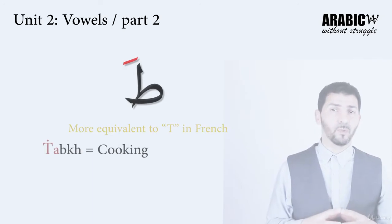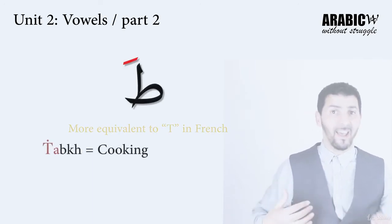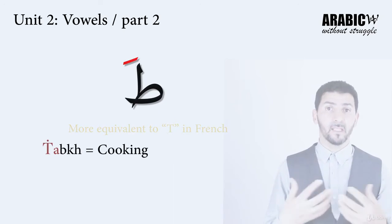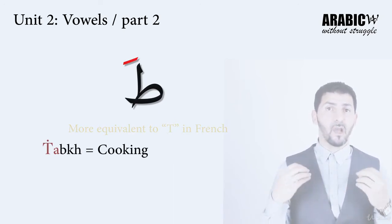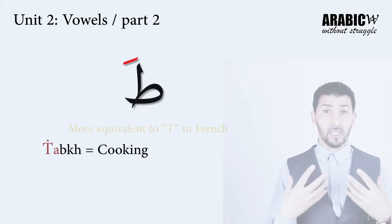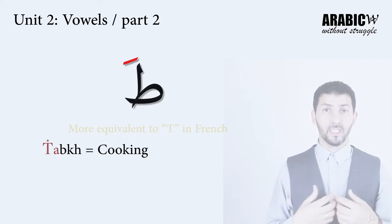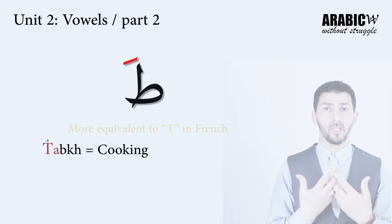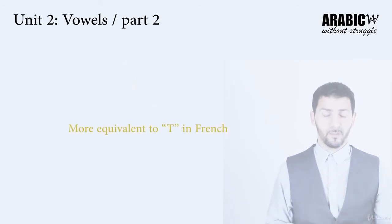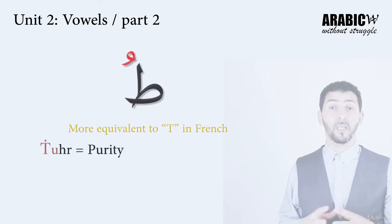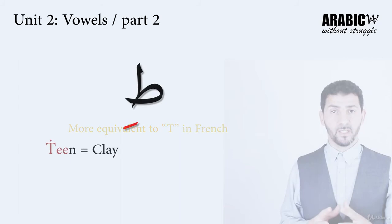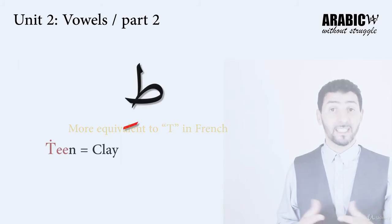طا is equivalent to 'T' in French, not the English 'T' sound. طا with فتحة makes طا, like طبخ — meaning 'cooking'. طا with ضمة makes طو, like طهر — meaning 'purity'. طا with كسرة makes طي, like طين — meaning 'clay'.